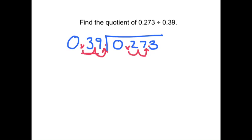Now we say, how many times does 39 go into 0? Zero. How many times does 39 go into 2? Zero. How many times does 39 go into 27? Zero times. And then we've got to figure out, how many times does 39 go into 273?